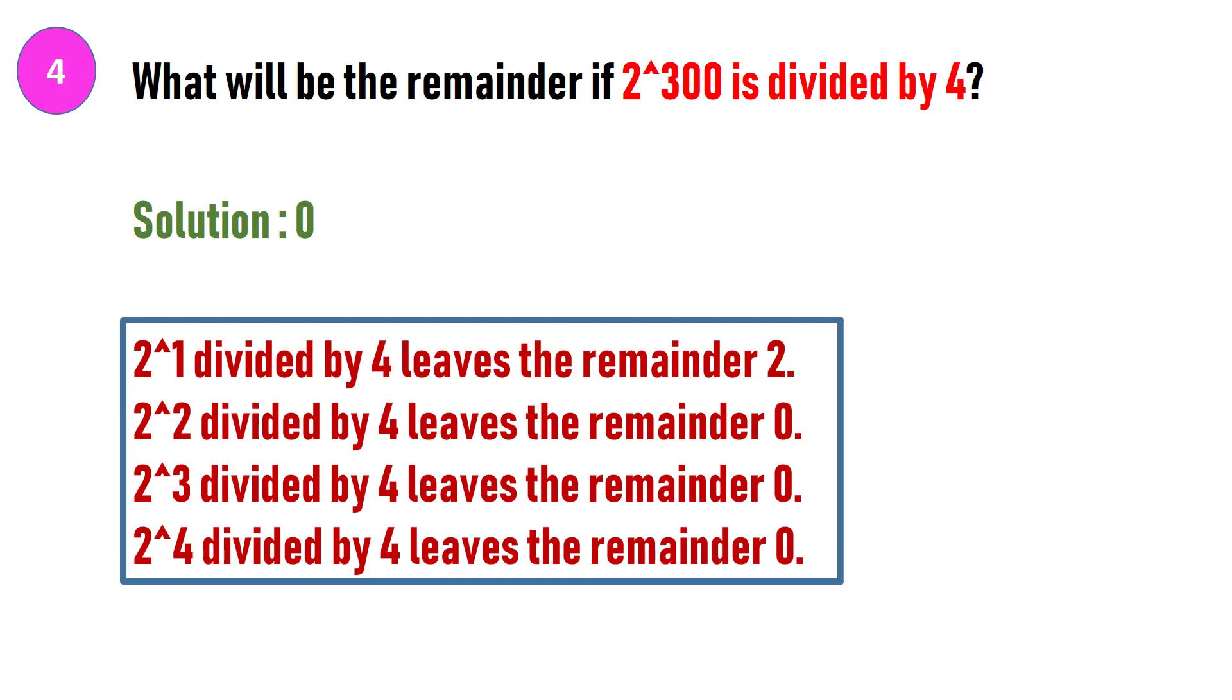Here 2 to the power of 1 divided by 4 leaves the remainder 2. 2 to the power of 2 divided by 4 leaves the remainder 0. 2 to the power of 3 divided by 4 leaves the remainder 0. 2 to the power of 4 divided by 4 leaves the remainder 0. And 2 to the power of 5 divided by 4 also leaves the remainder 0. You can see that all the following powers of 2 will be divisible by 4. Therefore, the remainder when 2 to the power of 300 is divided by 4 will be 0 only.